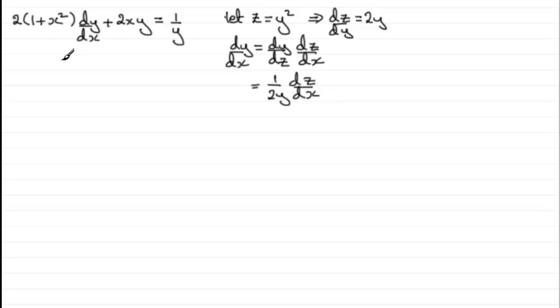Let's start over here by putting in some of our values. We've got 2 here multiplied by 1 plus x squared, and then it's multiplied by dy by dx, which is 1 over 2y dz dx. So let's just put that in: 1 over 2y dz by dx. And then we've got the plus 2xy equals 1 over y. Now I can see that this 2 here cancels with this 2. So we'll just cancel that out.